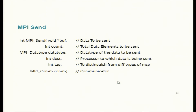MPI_Send has six parameters. Given an integer array A, we can directly pass A as the buffer since it's an array. We specify how many elements to send, then the data type — we cannot simply write 'int'; MPI has its own data types like MPI_INT. This is for portability: on some systems int may be two bytes, on others four bytes; MPI_INT is assured to be four bytes on all systems. Then we specify the destination rank.